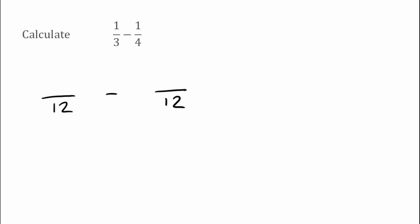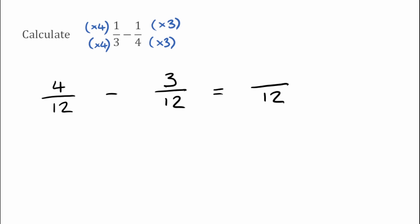Looking at this first fraction, I would have had to multiply the 3 by 4 to turn that into 12, so to keep things equivalent I'm also going to do that to the top: 1 times 4 gives 4. For the 1 over 4, we'd have had to multiply the bottom by 3 to turn that into 12, which means we multiply the top also by 3: 1 times 3 gives 3. So 4 over 12 take away 3 over 12 leaves us with 1 over 12.